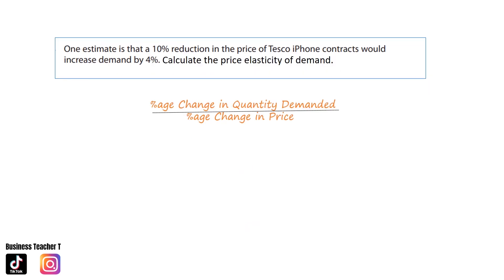Our next question: one estimate is that a 10% reduction in the price of Tesco iPhone contracts would increase demand by 4%. Calculate the price elasticity of demand. We input the information into the formula: plus 4% divided by negative 10%, which gives us an answer of negative 0.4.